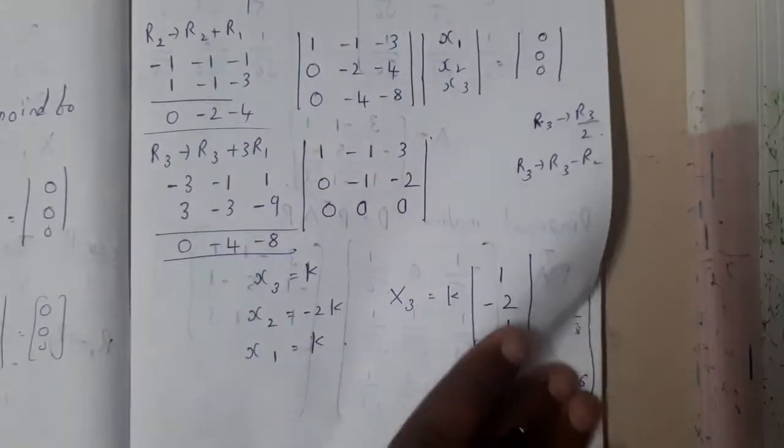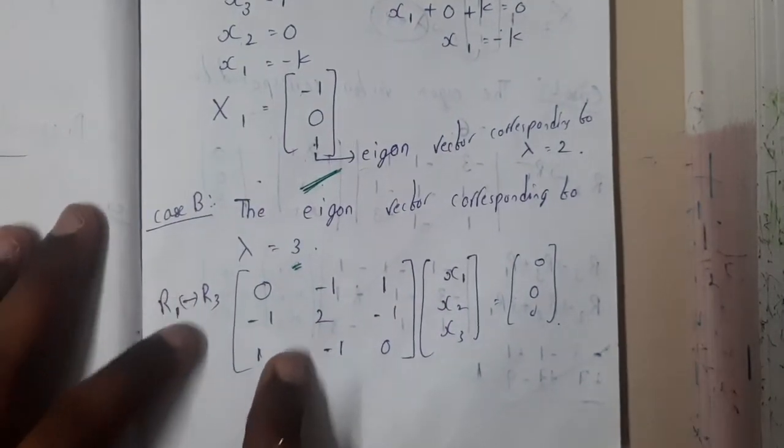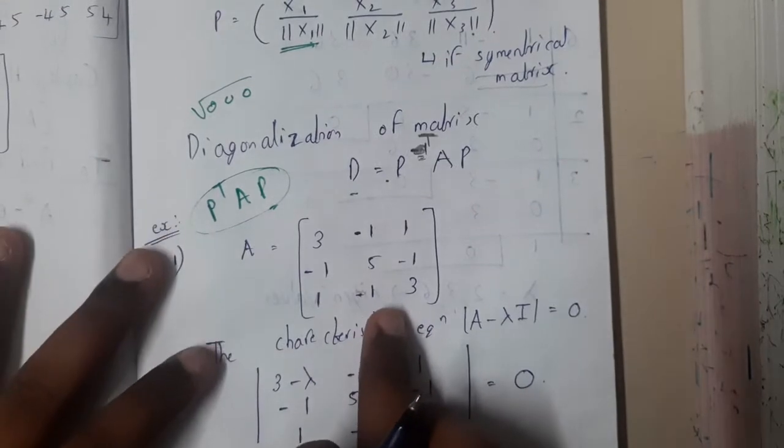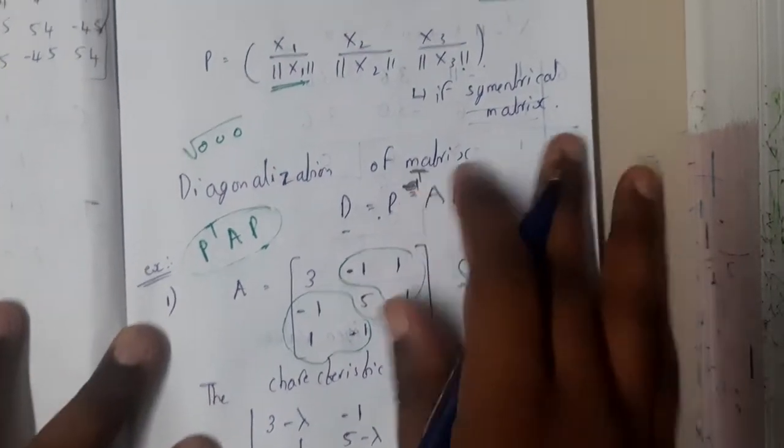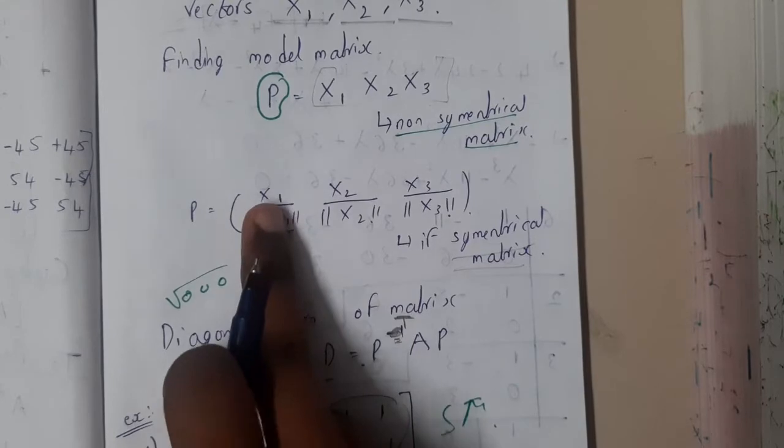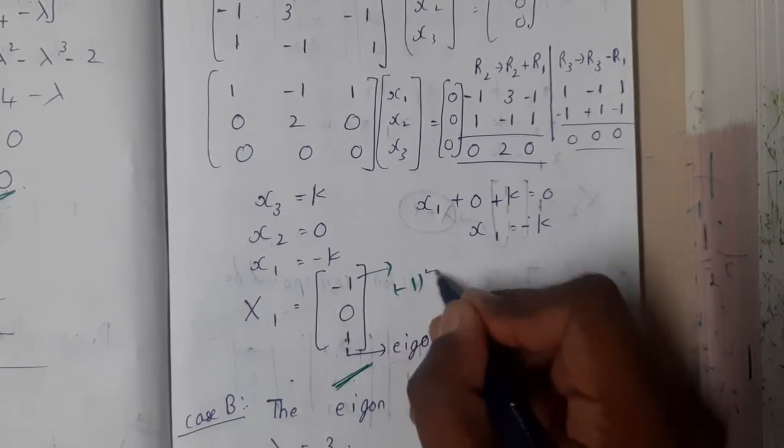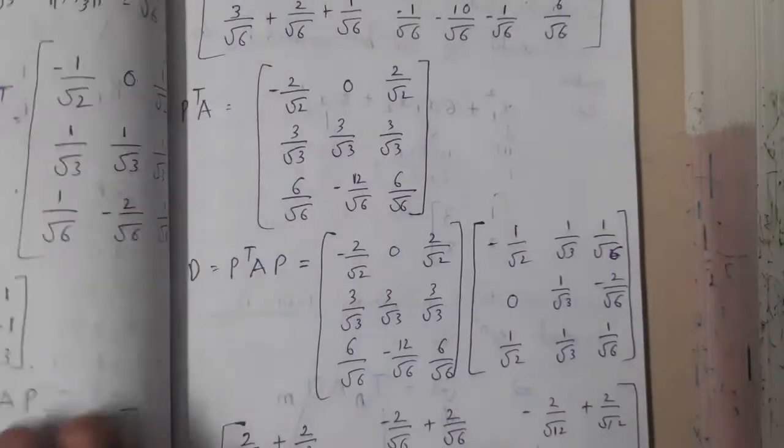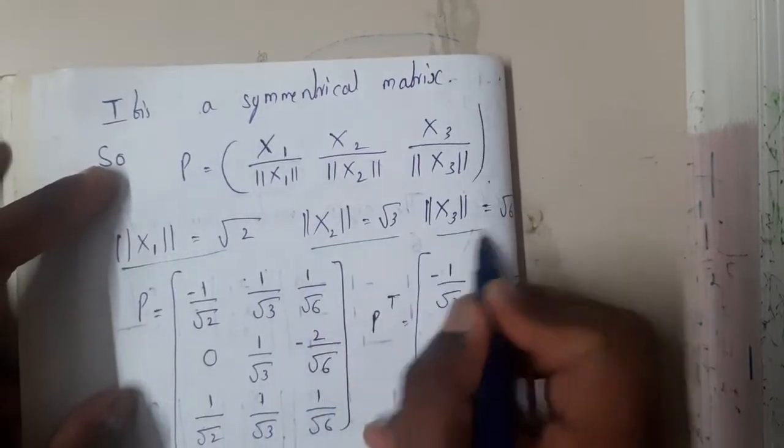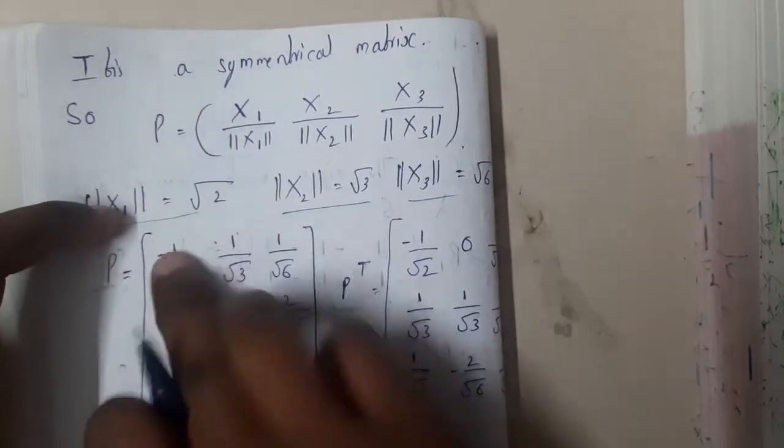Now if you observe our given matrix, it is looking something similar. If you transpose this matrix, that is our original matrix. If you transpose this matrix it is looking 100% similar. This side is similar to this side, hence it is a symmetrical matrix. So you need to divide X by the mod of X or norm of X. That norm is the squares of addition. Minus 1 whole square plus 0 whole square plus 1 whole square under root, so 1 plus 1 is root 2. In that way you will be calculating. Once you calculate it you will be substituting in the given equation. You will be getting the P value, and P transpose is converting rows into columns.